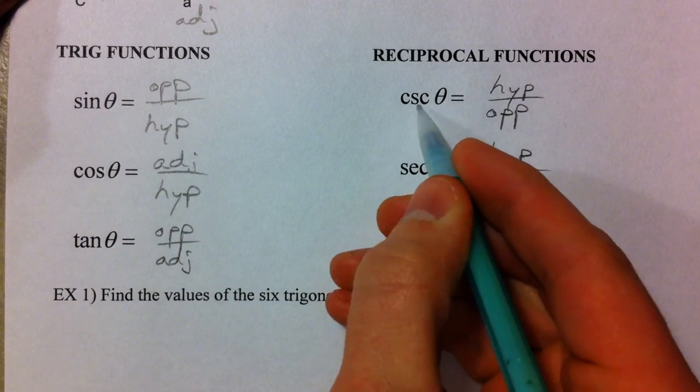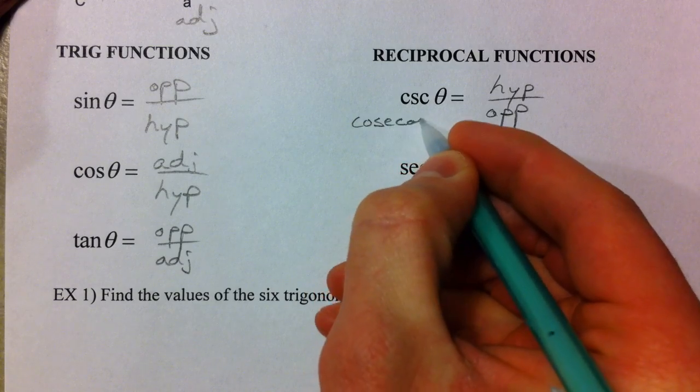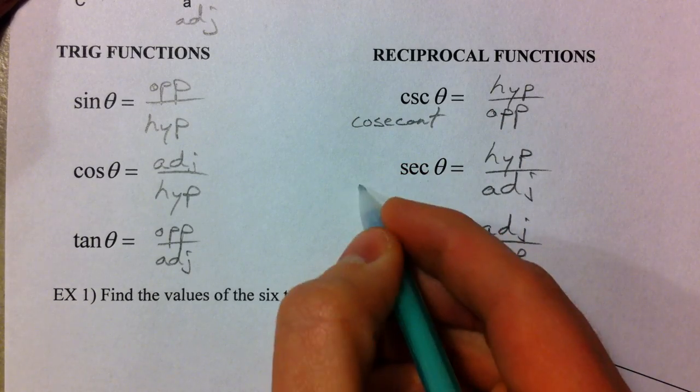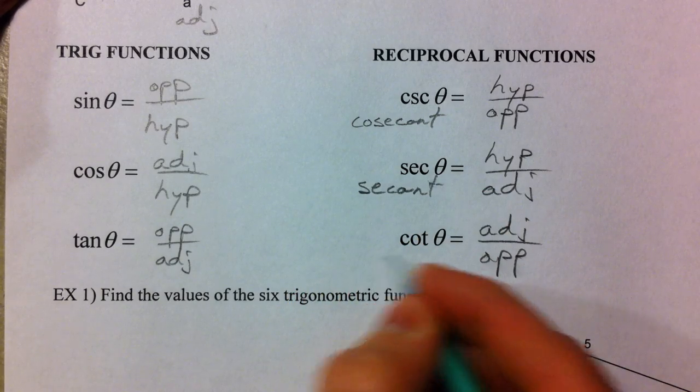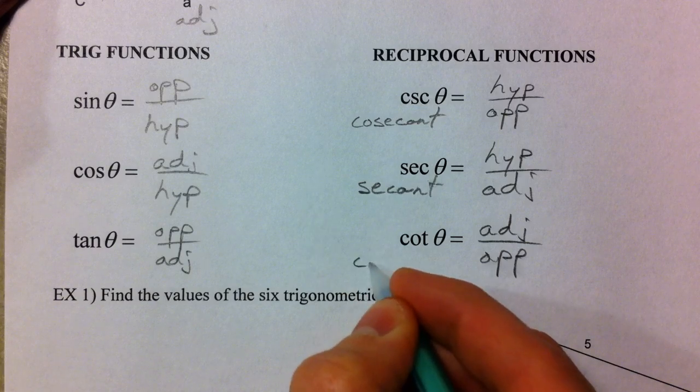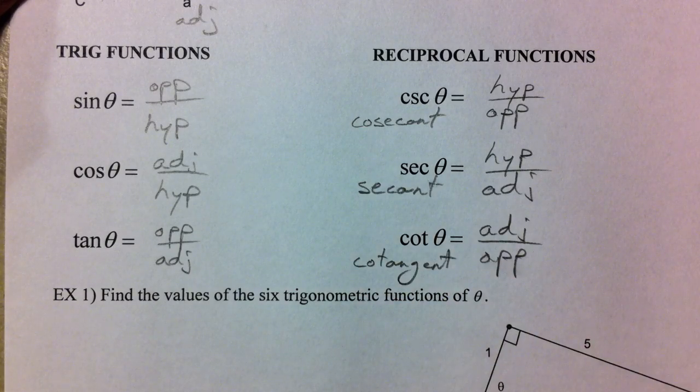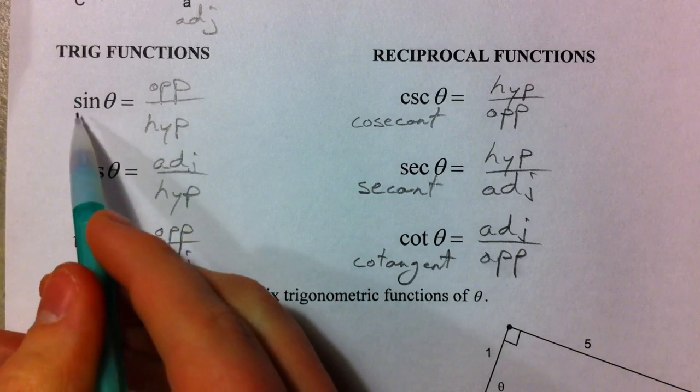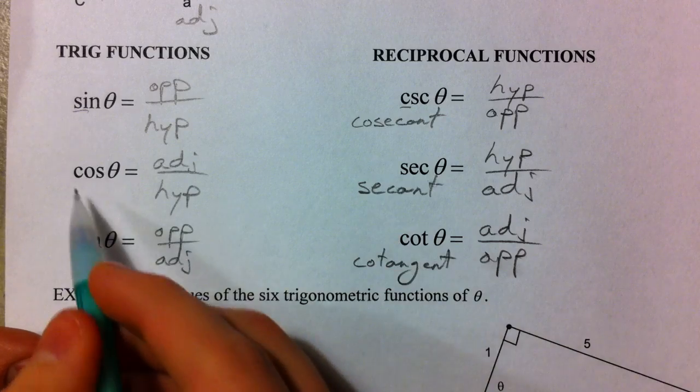This is C-S-C, we say cosecant. And this is S-E-C, which stands for secant. And this is C-O-T, which stands for cotangent. So, obviously, the tangent and the cotangent are reciprocals. That's pretty easy to remember. But, unfortunately, the way it worked out is that sine and cosecant go together. And cosine and secant go together.